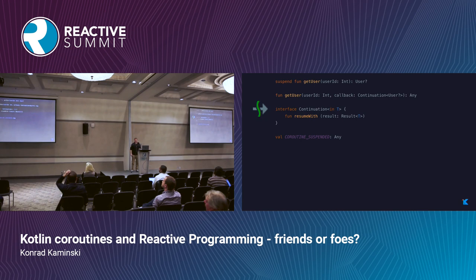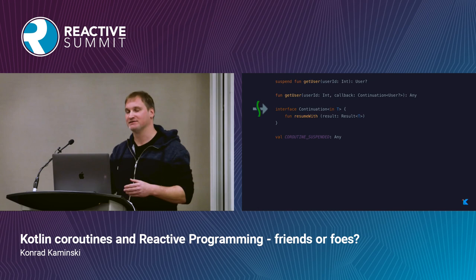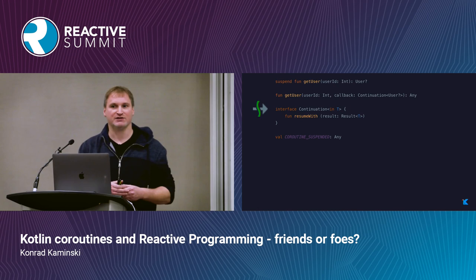Coroutines in Kotlin are created using suspending functions. A suspending function is a function which can suspend its execution — it will start executing at some point, can suspend its execution, and later on can resume its execution.